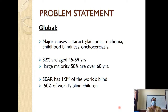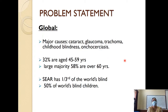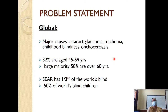Then go to the problem statement. The major global causes are cataract, glaucoma, trachoma, childhood blindness, and onchocerciasis, which occurs mainly in tropical sub-Saharan African countries. Typically, cataract affects practically everybody above 60 years, glaucoma affects people in the 45 to 59 years age group and above, and trachoma has ceased to be a major problem in India due to improvements in awareness and personal cleanliness.